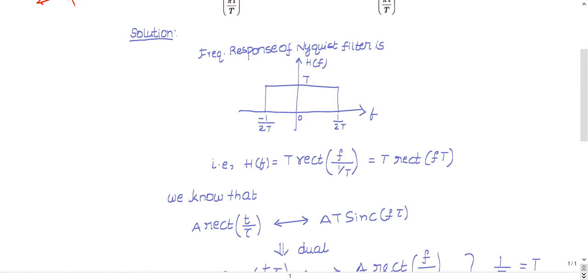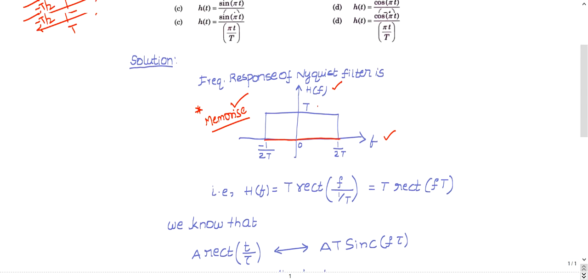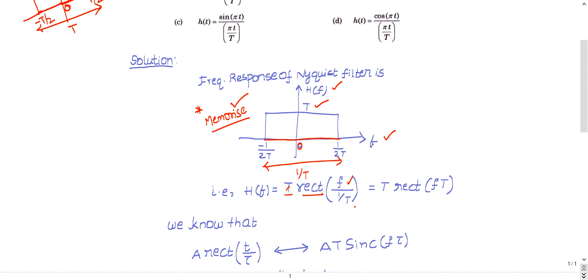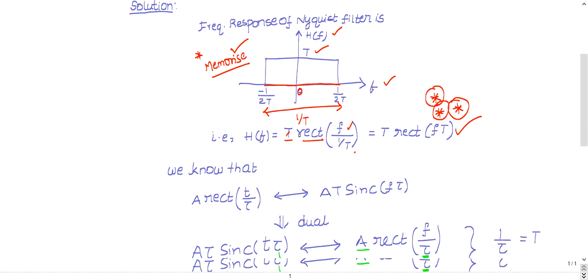Now let us see the frequency response of the Nyquist filter. The frequency response of the Nyquist filter is something you need to memorize. The x-axis is frequency, y-axis is H(f). The amplitude is T, and the right side portion extends to 1/(2T), the left side also to 1/(2T). You can write this in equation form as T · rect(f · T), where the x-axis is F, center is at origin, and total width from side to side is 1/T. So T · rect(F·T) is the frequency response of the Nyquist filter.